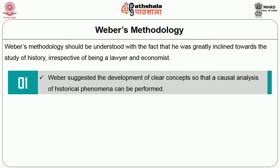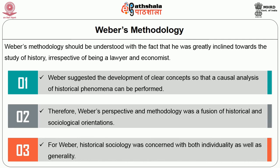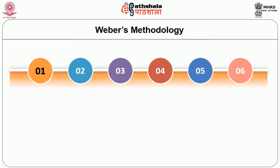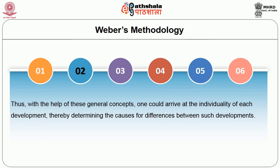Weber suggested the development of clear concepts so that a causal analysis of historical phenomena can be performed. Weber's perspective and methodology was a fusion of historical and sociological orientations. For Weber, historical sociology was concerned with both individuality as well as generality. For this unification to be achieved, there was development and utilization of general concepts known as ideal types while studying particular individuals, events or societies. With the help of these general concepts, one could arrive at the individuality of each development, thereby determining the causes for differences between such developments.